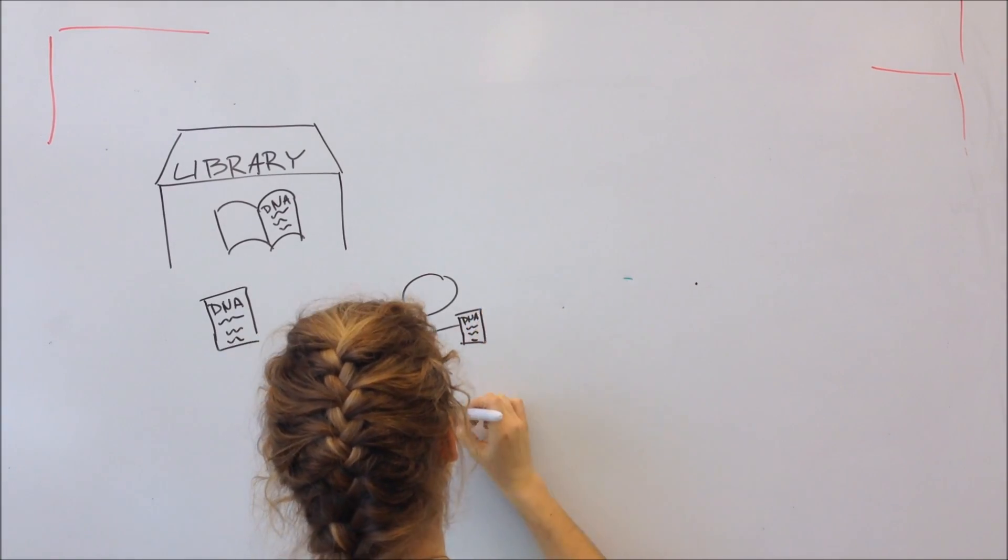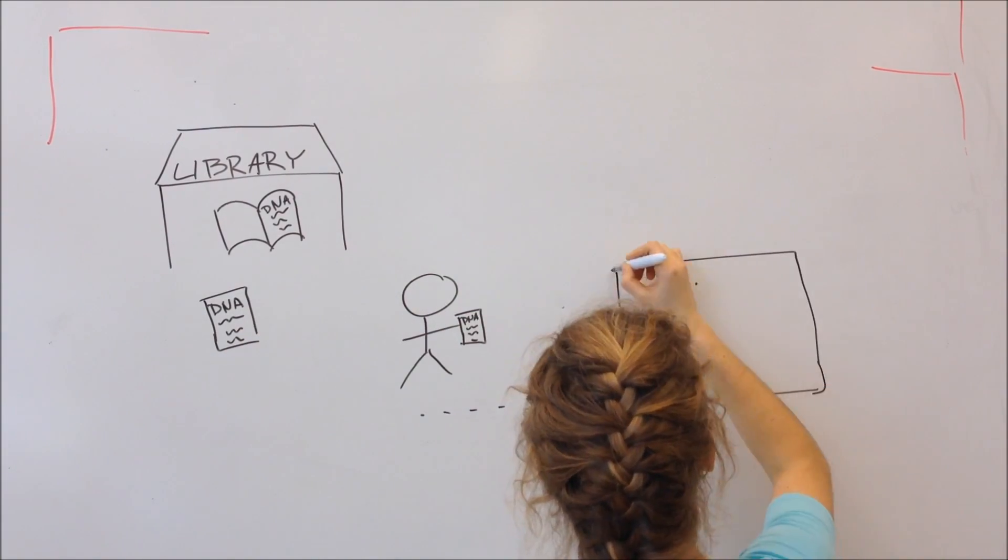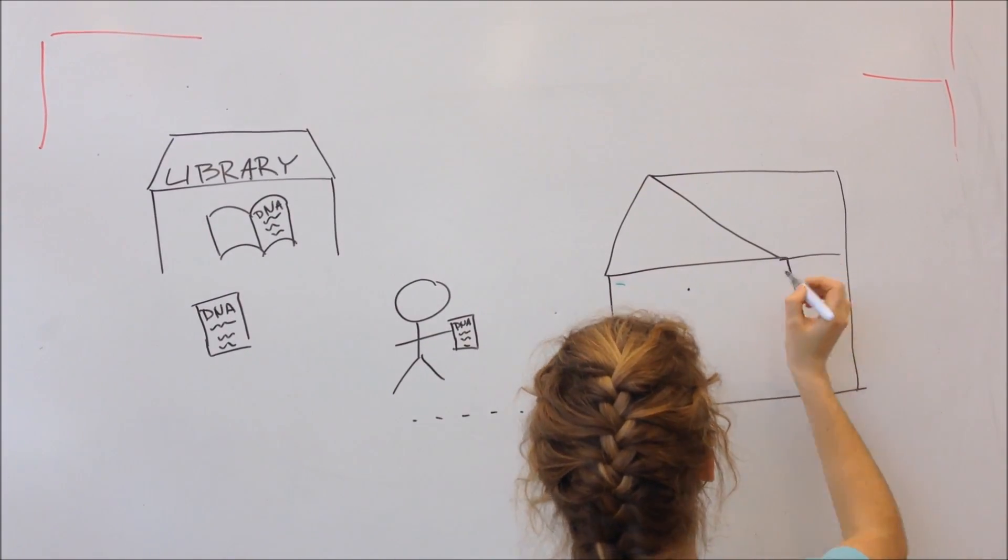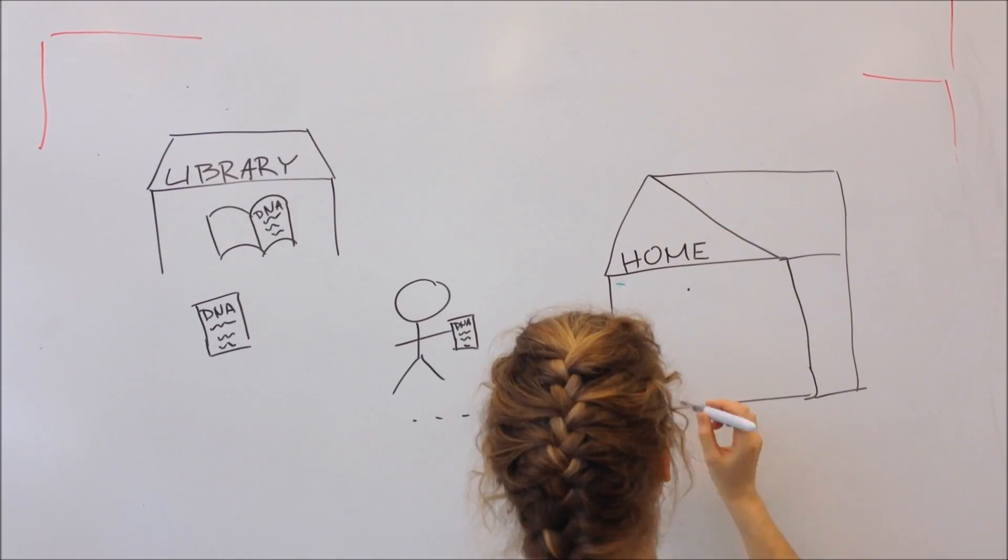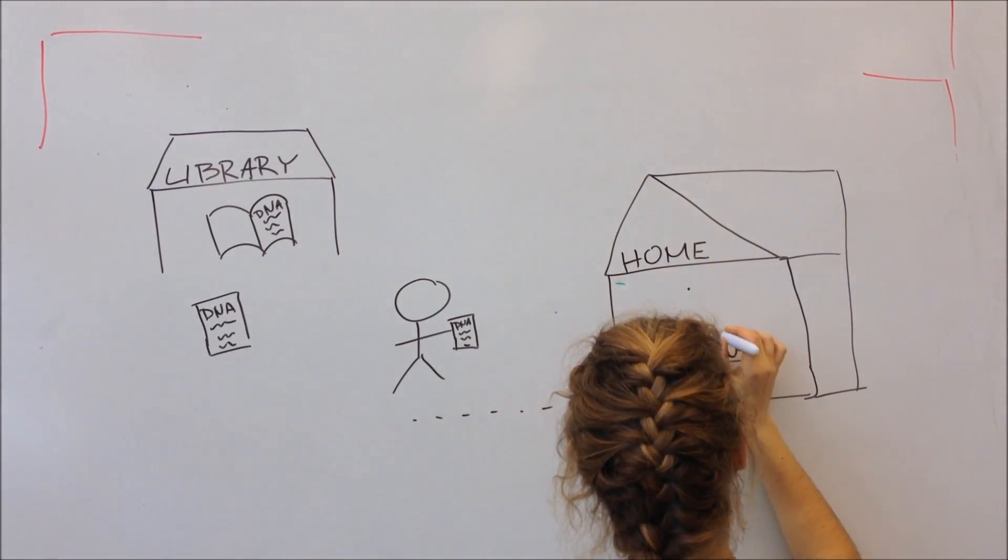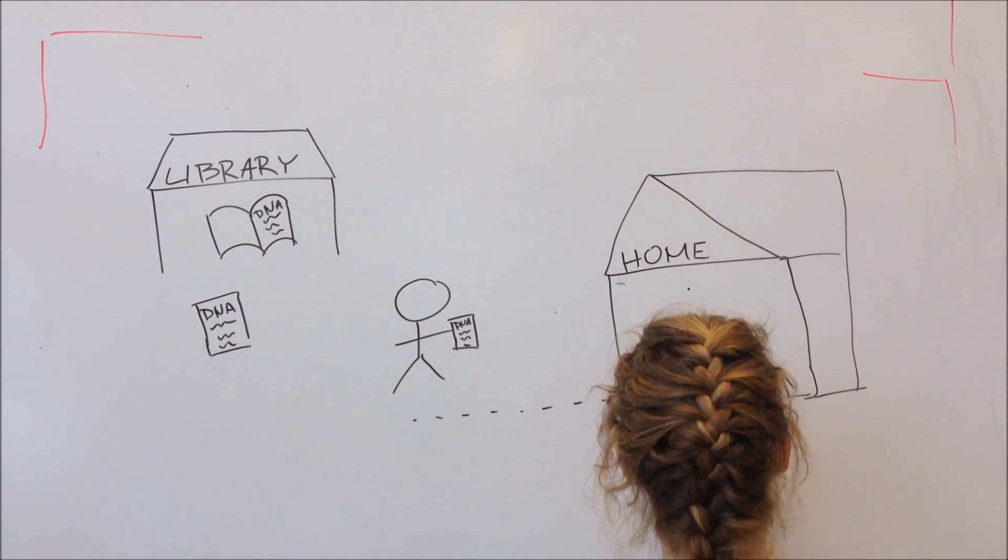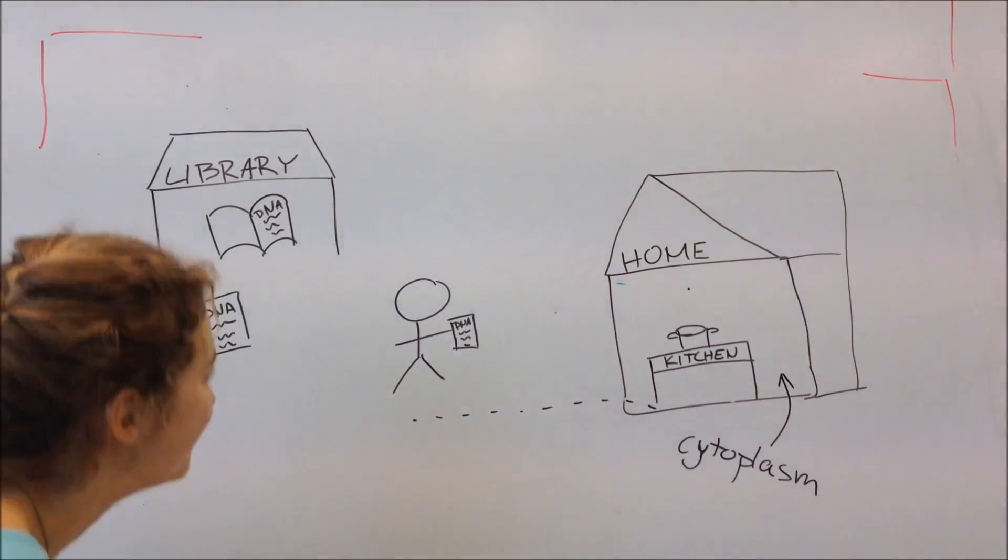And why do we need to copy the cookbook onto a paper? Because we cannot cook in the library where we found our cookbook, so we need to get into the kitchen where all our equipment is. The kitchen is cytoplasm, and equipment are the mechanisms in the cytoplasm.